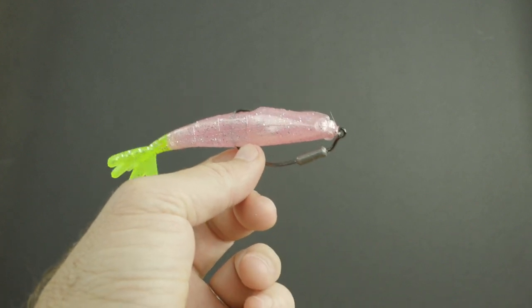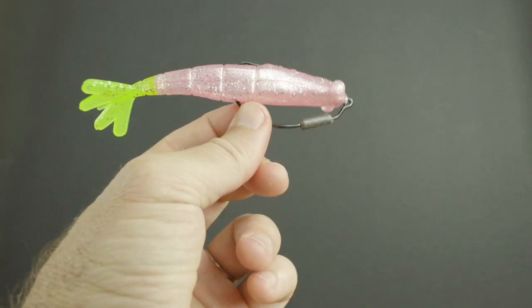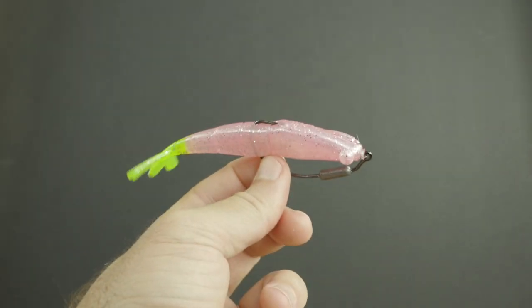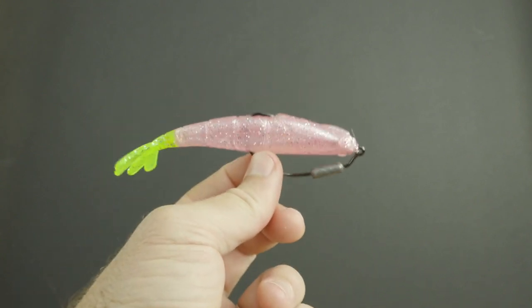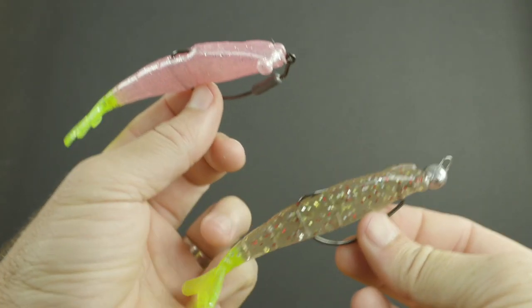But most importantly it has an amazing glide in the water. It skips well, amazing glide in the water, which is why this has become my go-to lure when I want to catch those bigger smarter fish.